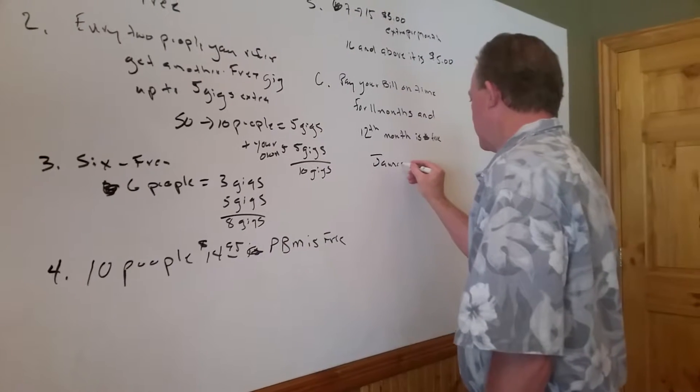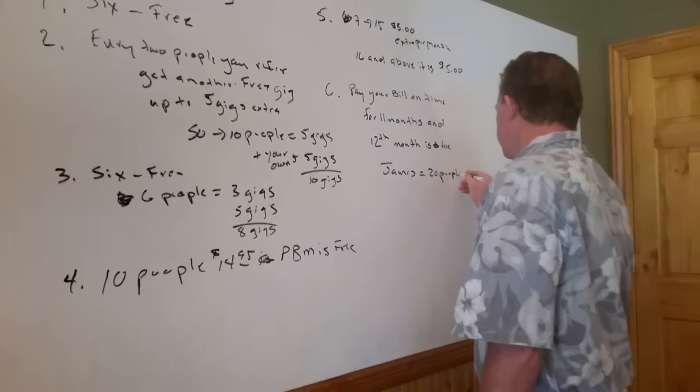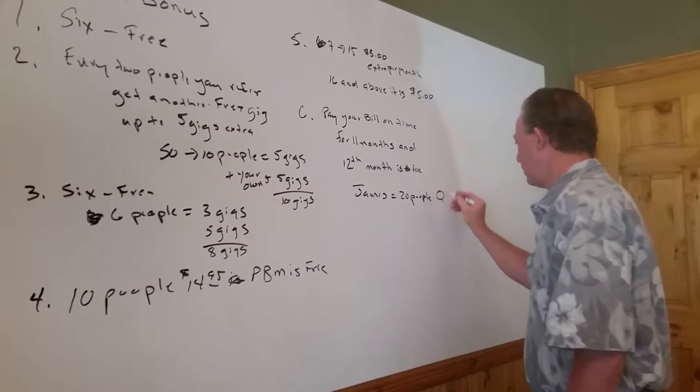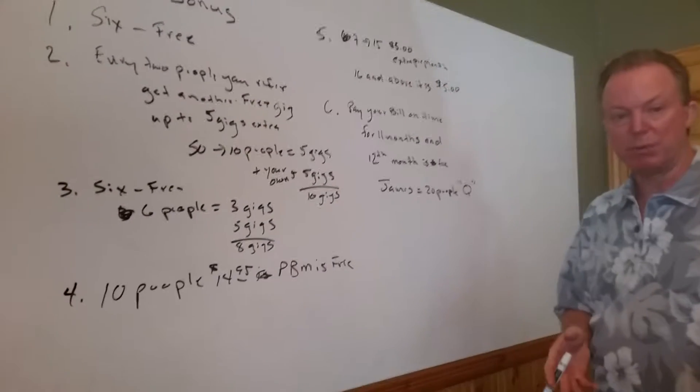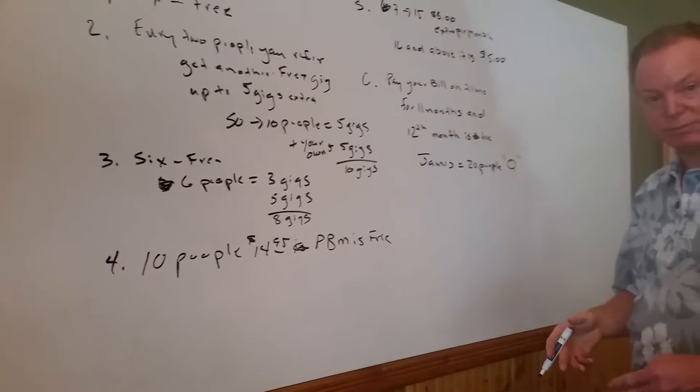He had 20 people, besides himself, signed up on qualified plans. Qualified. So, some of those people are building sales organizations and some aren't.